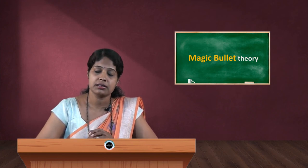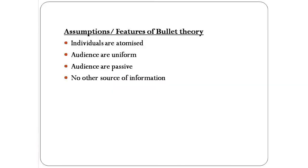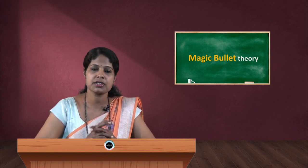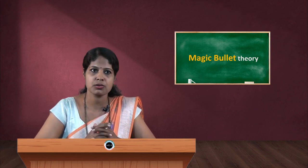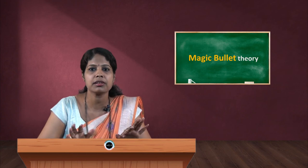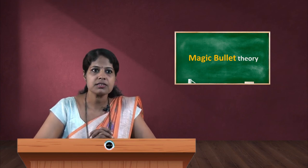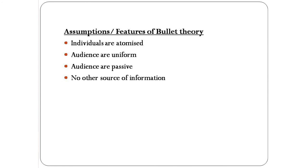The second assumption the theory proposes is that the audience is uniform. According to this theory, the audience receives the same message from the same media, creating similar attitudes and beliefs. Audience members are uniform — not diversified. The third assumption is that the audience is passive. According to this theory, people are not rational — they don't think. They just receive whatever media dumps in front of them, accepting messages unquestioningly.